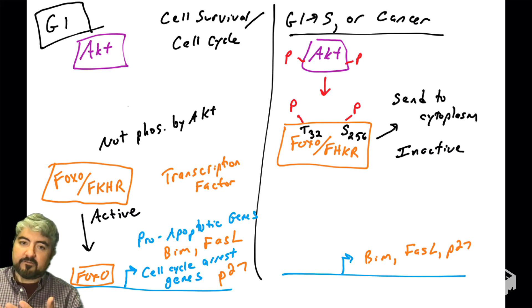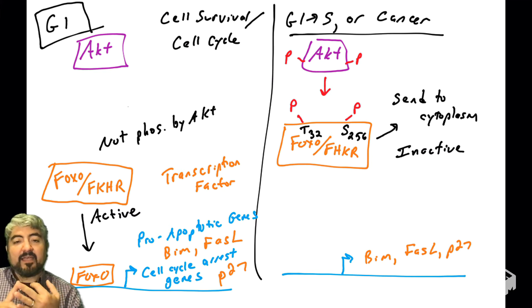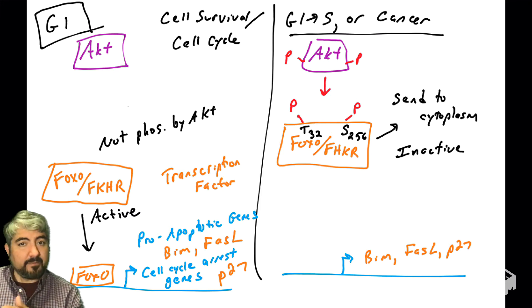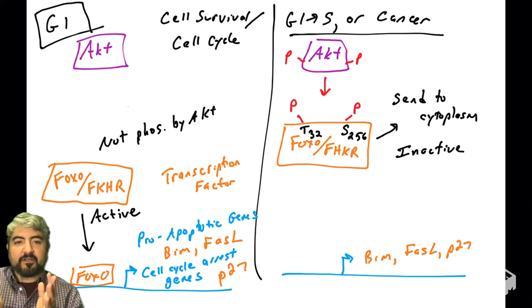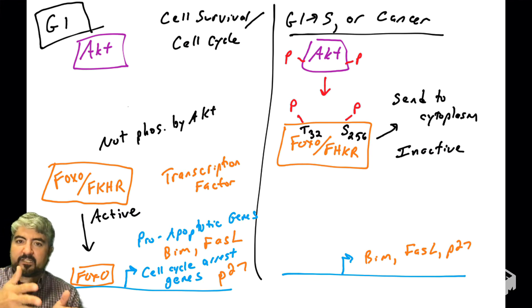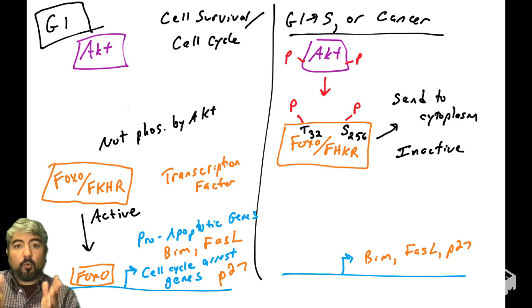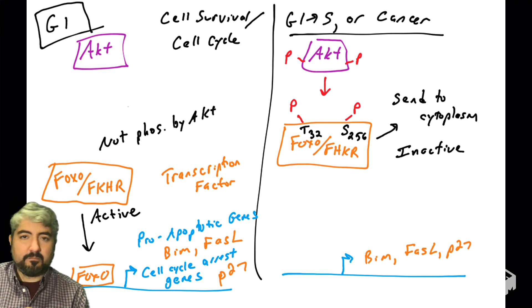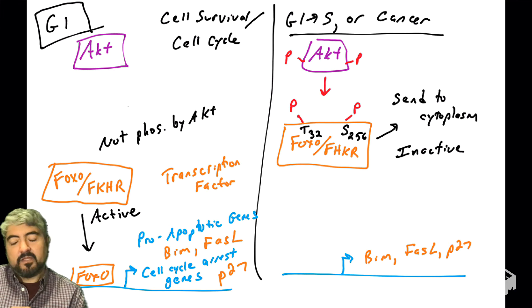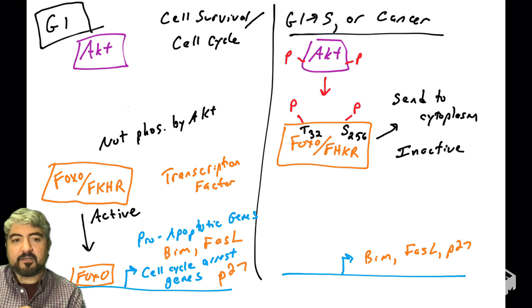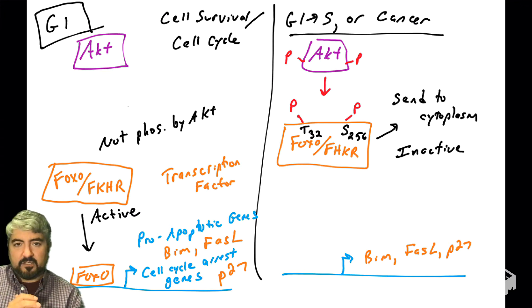If FOXO is inactive, it cannot turn on BIM, FAS-ligand, or P27. This helps inhibit pro-apoptotic signals, inhibit apoptosis, and also inhibit cell cycle arrest, allowing cells to go through the cell cycle. So these are two ways AKT can regulate apoptosis and the cell cycle: either by phosphorylating proteins directly that regulate apoptosis, or by phosphorylating transcription factors that turn on pro-apoptotic genes or regulate the cell cycle. FOXO is one transcription factor AKT targets directly.